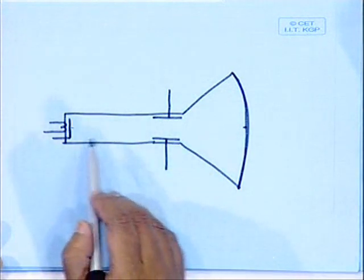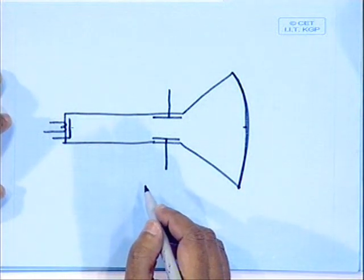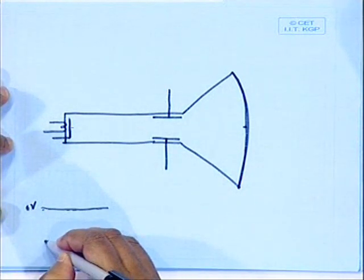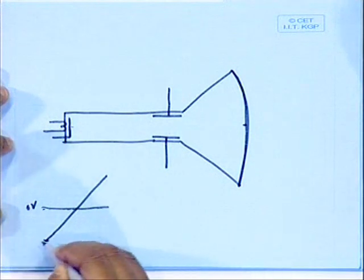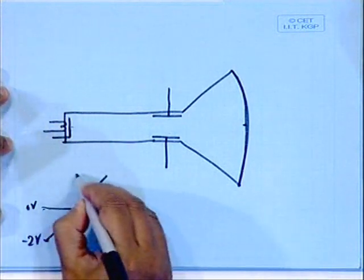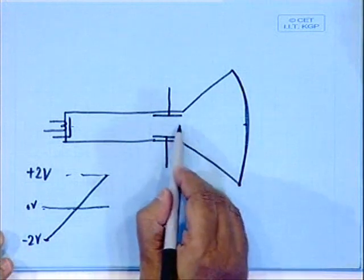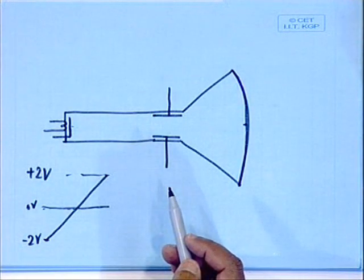Suppose only the horizontal coils exist. Using this horizontal coil, if I change the voltage from some negative voltage to positive voltage — say from minus 2 volts to plus 2 volts — when the coil voltage is minus 2 volts it will direct the electron beam to the extreme left, and when we give plus 2 volts the electron beam will be directed to the extreme right. If I continuously keep changing this voltage from minus 2 to plus 2 volts, it will go from the left-hand side to the right-hand side.